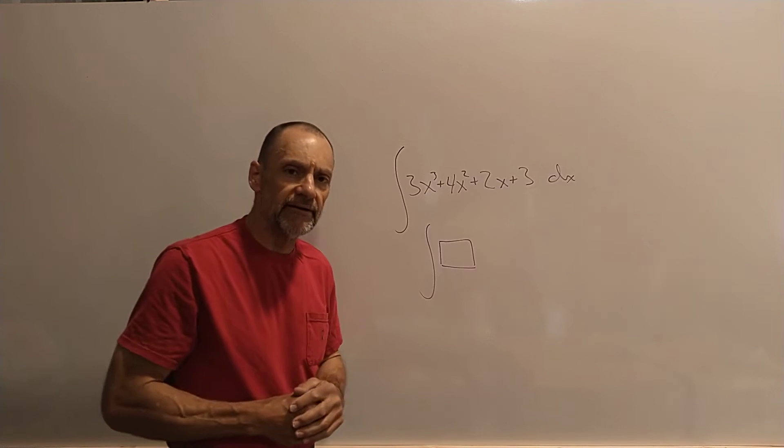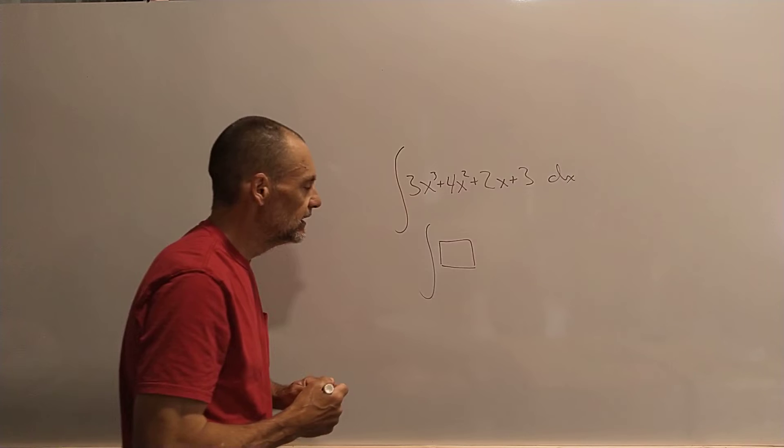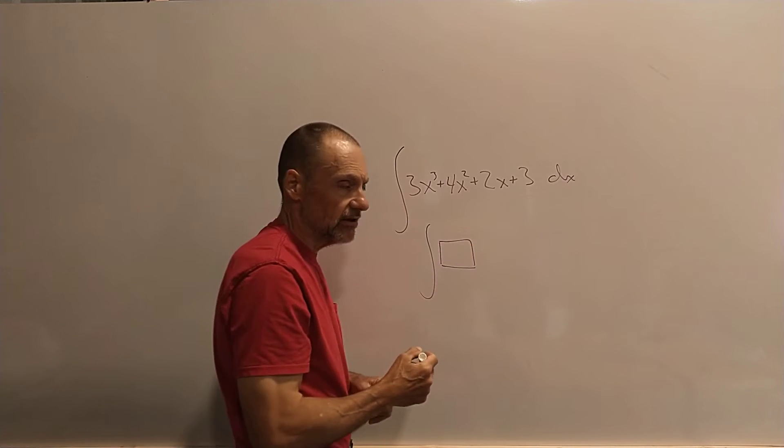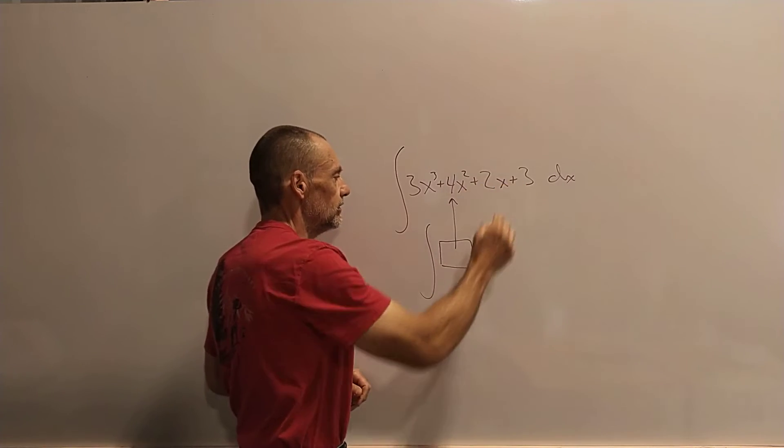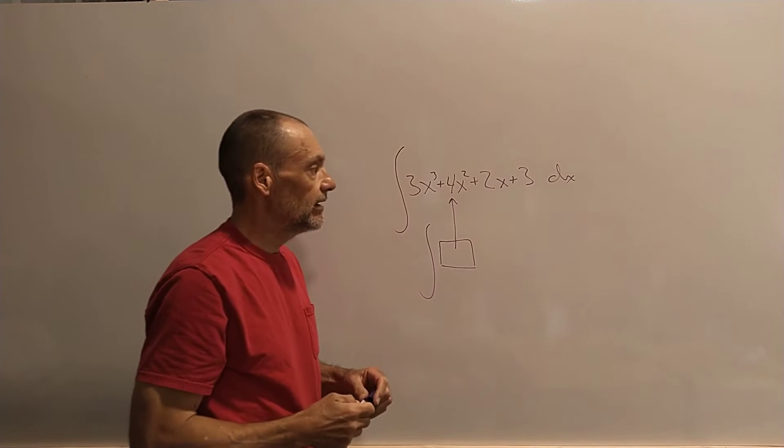So what if there was a way to take this terrible, terrible function or a significant number of these terrible, terrible functions and convert them somehow into polynomials?